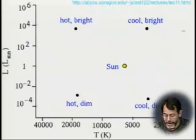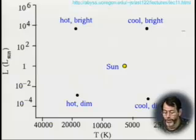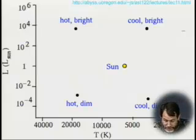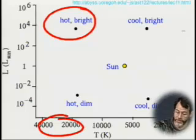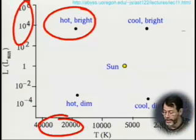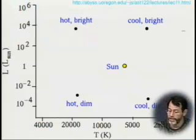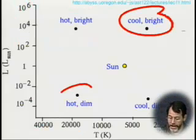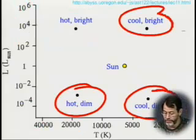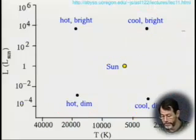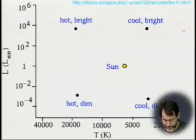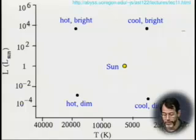Here again is a breakdown of the Hertzsprung-Russell diagram in terms of where to find different kinds of stars. The hot, bright stars are up in the upper left. The cool, bright stars are over to the upper right. The hot, dim stars are in the lower left. The cool, dim stars are in the lower right. The Sun is somewhat close to the middle. We live with an average, quite stable star in a very stable phase, which helps life develop, we think.